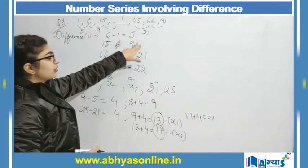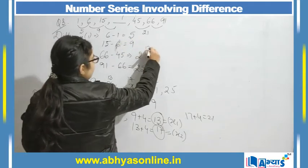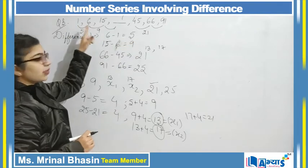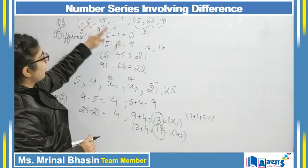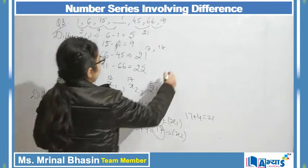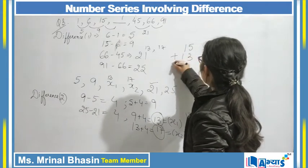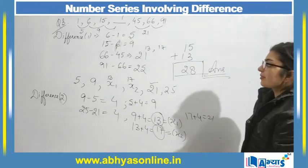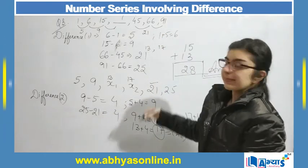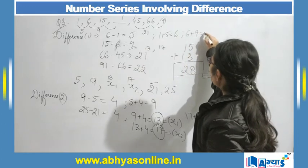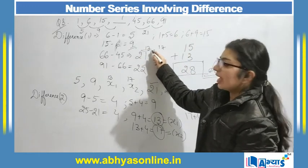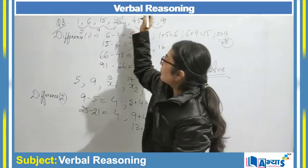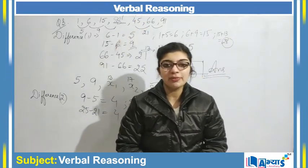Now using these differences to rebuild the original series: 1 + 5 = 6 ✓, 6 + 9 = 15 ✓. Next: 15 + 13 = 28. So the missing term is 28. Placing 28 in the blank: 1, 6, 15, 28, 45, 66, 91. We can verify: 28 + 17 = 45 ✓, 45 + 21 = 66 ✓, 66 + 25 = 91 ✓. So 28 is the desired term to complete the series.